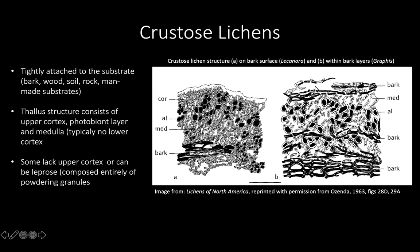If you look at the example on the right, you see that there are layers of bark intermixed with the medulla and the photobiont layer. Some crustose lichens have a thallus structure that consists of an upper cortex, the photobiont layer, and the medulla, but typically there's no lower cortex. Some lack an upper cortex altogether, and some can be considered what we call leprose lichens, which are composed entirely of powdery granules.